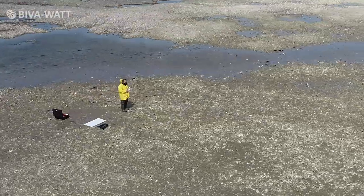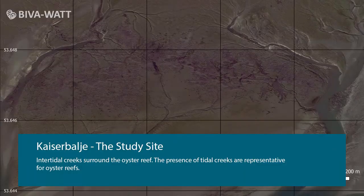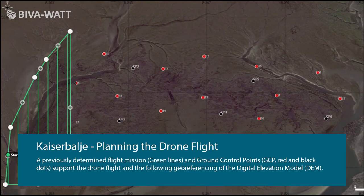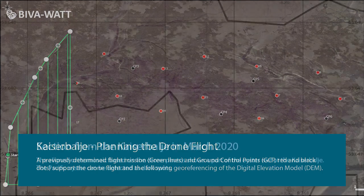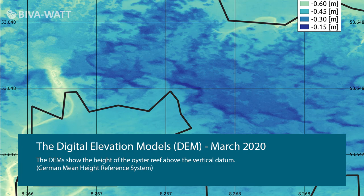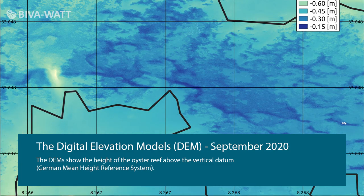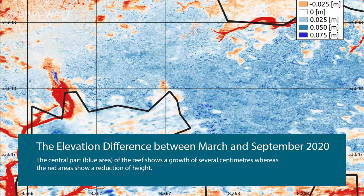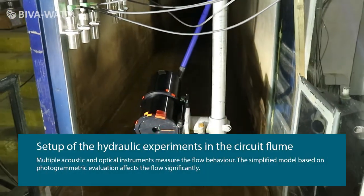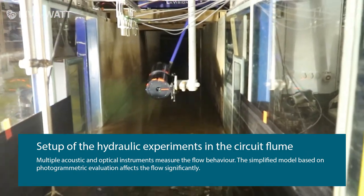Together with Kai, I investigate the annual growth and the morphological change of the oyster reefs based on photogrammetry and data from terrestrial laser scanning conducted in the field. Besides the fieldwork and evaluation of the propagation of oyster reefs, Jan and I will conduct hydraulic experiments on the roughness effects of oyster reefs on currents and waves by using acoustic and optical measuring instruments such as particle image velocimetry in a closed-circuit flow.